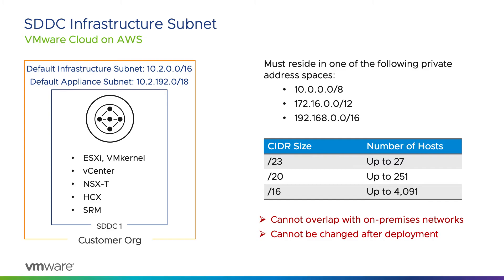The primary factor in choosing the management CIDR block is the anticipated scalability requirements of the SDDC. The management CIDR block cannot be changed after the SDDC has been deployed, so a /23 block is appropriate only for SDDCs that will not require much growth in capacity.